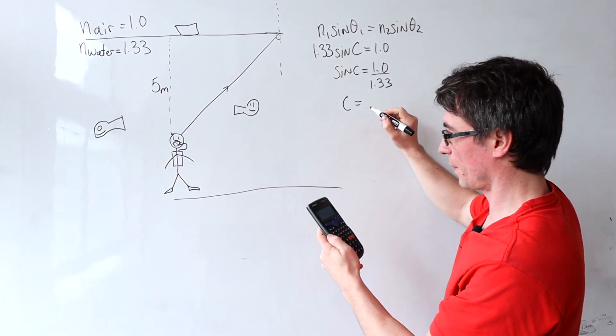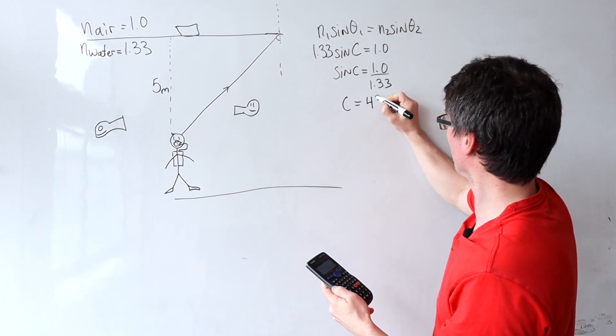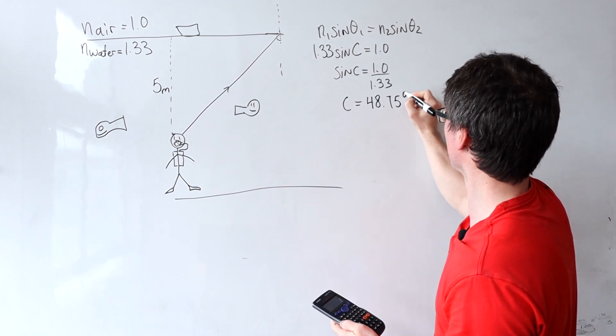Taking the inverse sine of this, I get that the critical angle is 48.75 degrees.